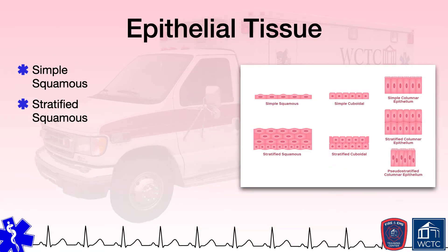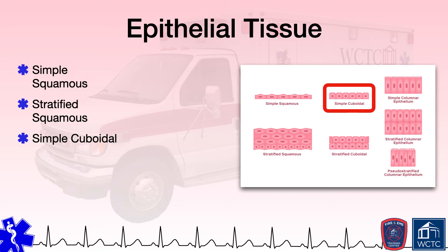Simple cuboidal epithelial tissue is built from a single layer of cells that are essentially cube-shaped, being as wide as they are tall. As a lining for the kidney tubules, this tissue supports the absorption of water and electrolytes. Where it lines the surface of the ovaries, the salivary glands, thyroid gland, and pancreas, simple cuboidal epithelial tissue facilitates the secretion of enzymes and hormones.